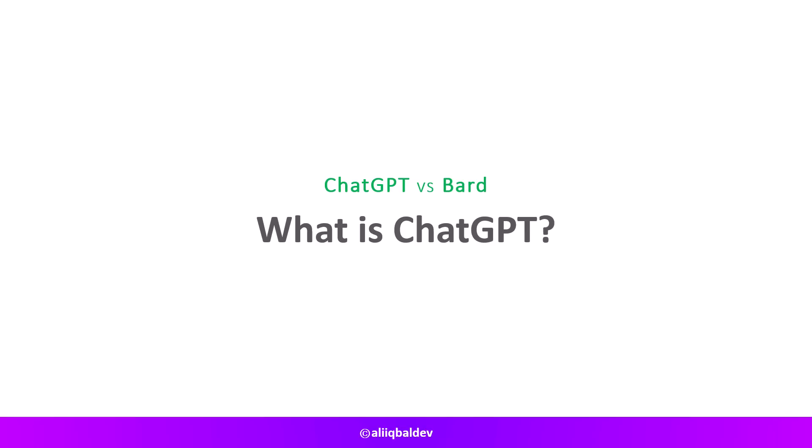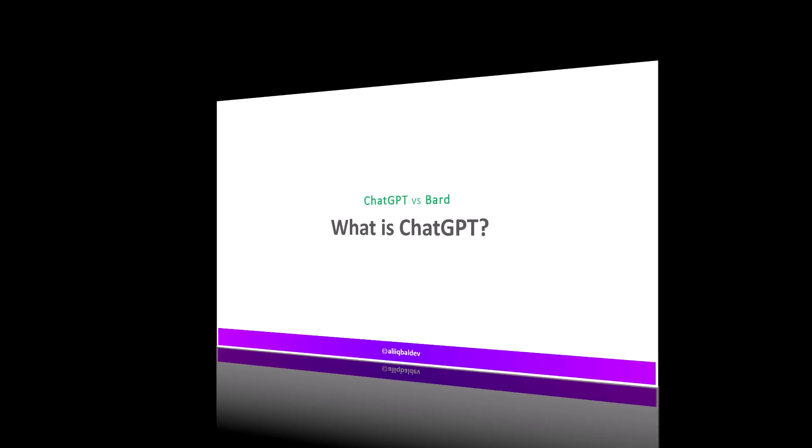The GPT-3 model, which is used by ChatGPT, was trained using online text written by people. This language model is used by ChatGPT to generate replies to user questions. ChatGPT's language model may help you with things like producing emails, essays, poetry, songs, translations, as well as with queries and code debugging and so on.